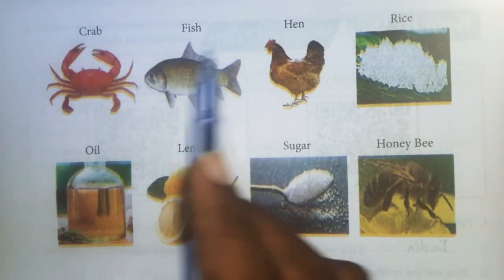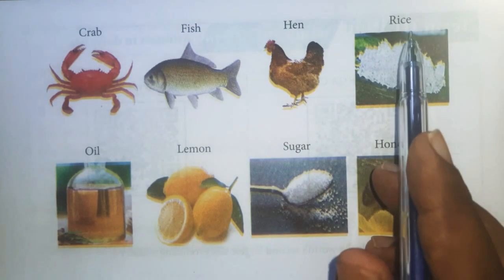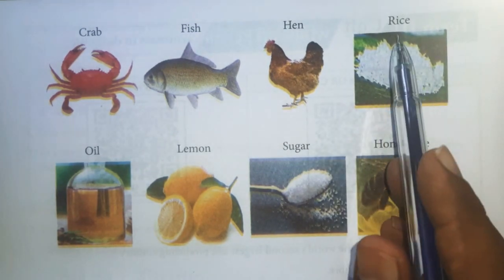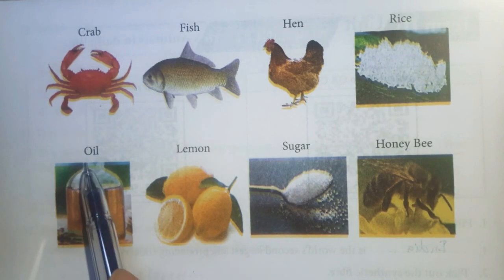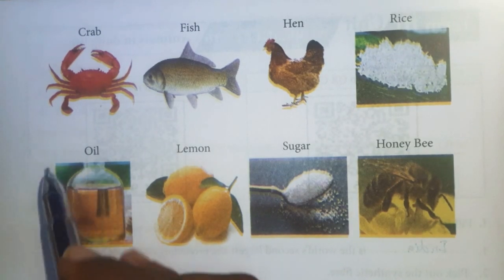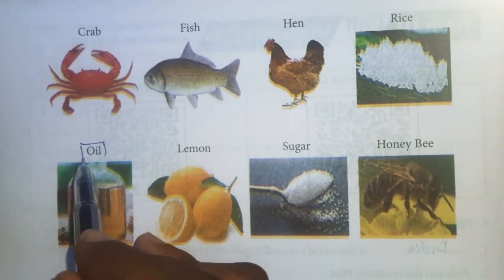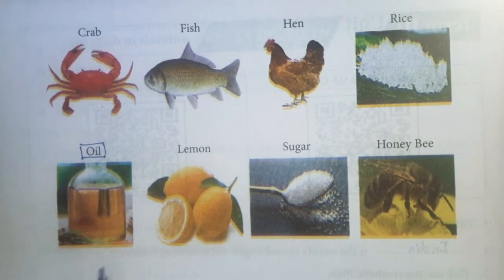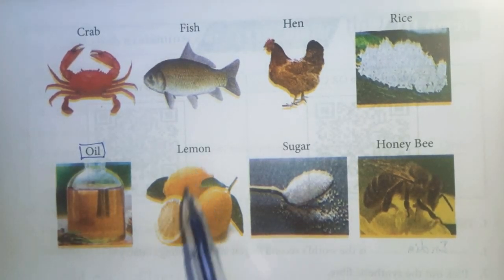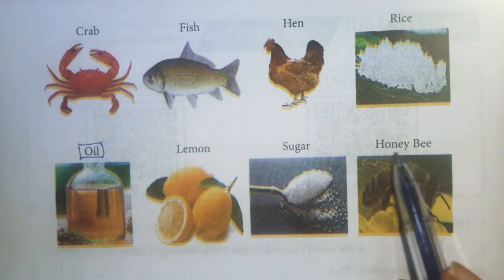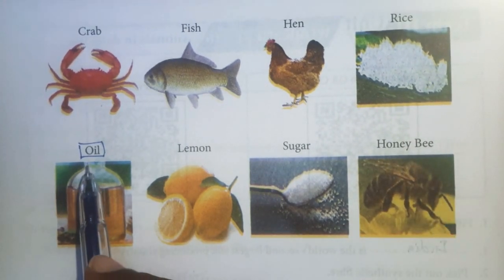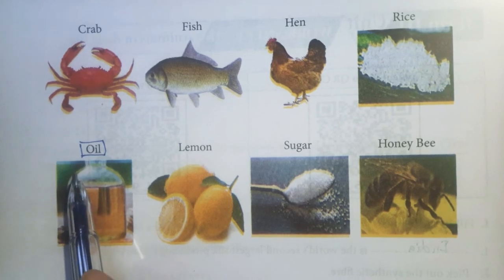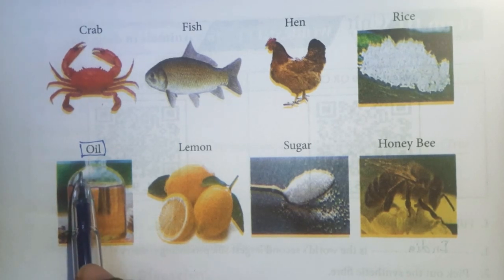Crab, fish, and hen are all animals. Rice is a plant product. Oil is both an animal product and plant product — here you can consider it as an animal product used as food. Lemon and sugar are plant products. Honey bee is an insect. So here, oil used as food is the one produced from animals.